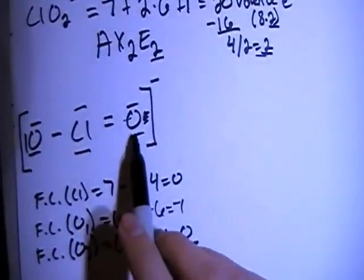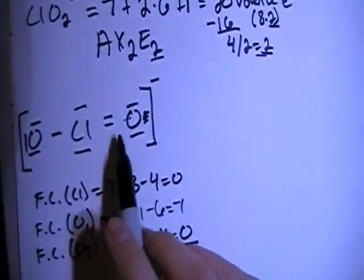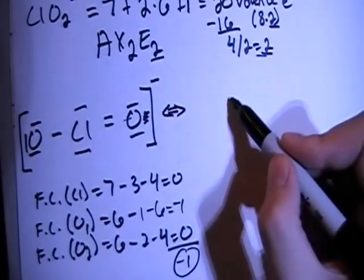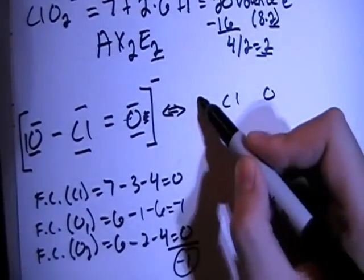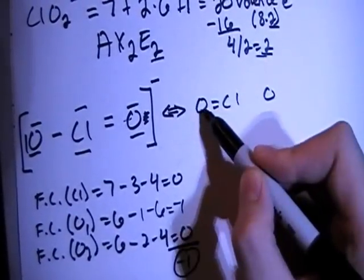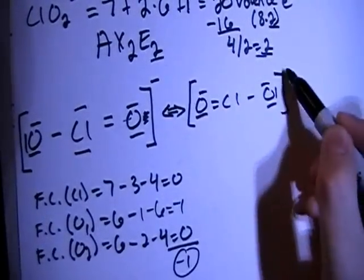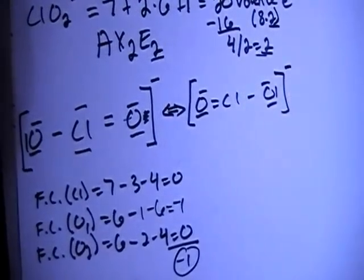how we chose this oxygen to have the double bond, it could have just as easily been this one. So that's why we have to include a resonant structure. So I'm going to draw it again. This time, the left oxygen will have the double bond, and the right will have the single bond. And there we go, okay?